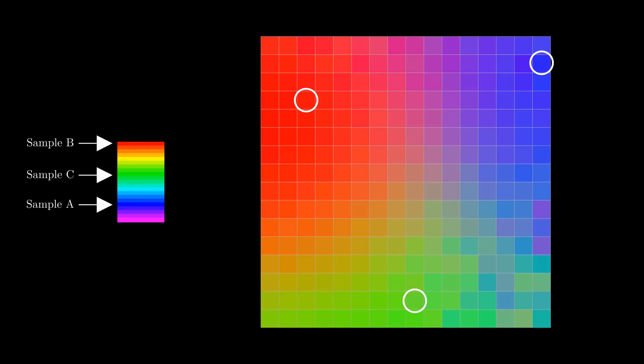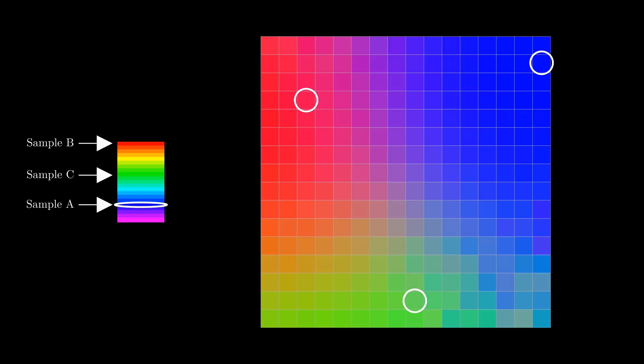Then, let's say that sample A randomly gets chosen for this iteration. When the weights are updated, nodes B and C may not best represent samples B and C anymore. Now, they might be best represented by these two nodes. Notice that the new best matching node for training sample B moved farther away from the original best matching node.